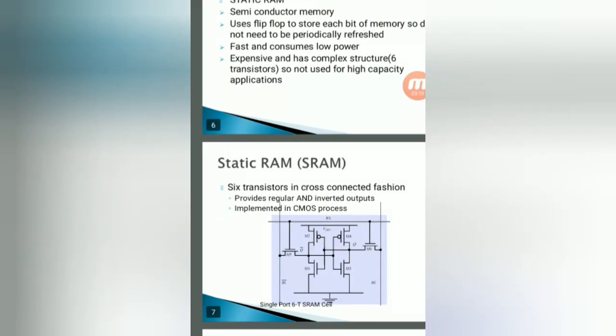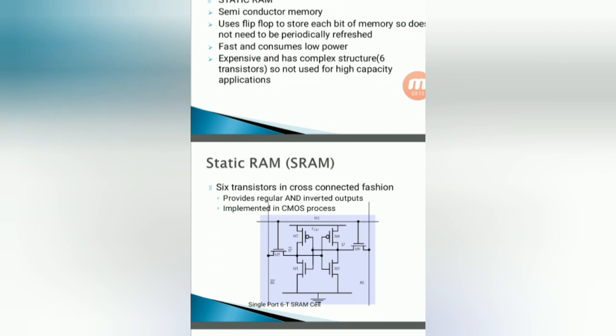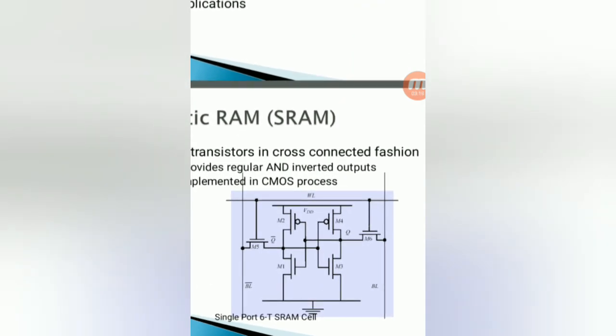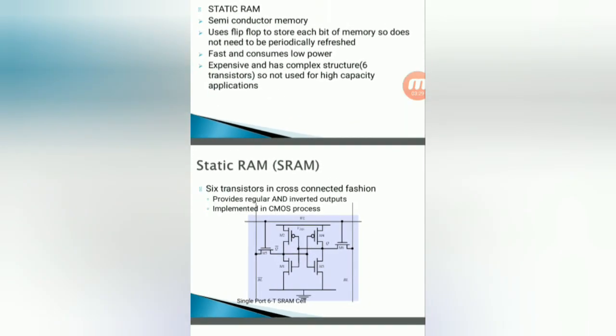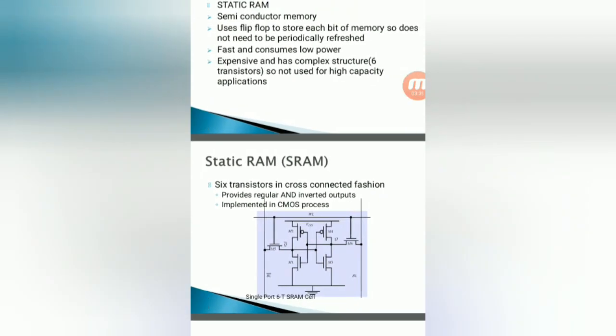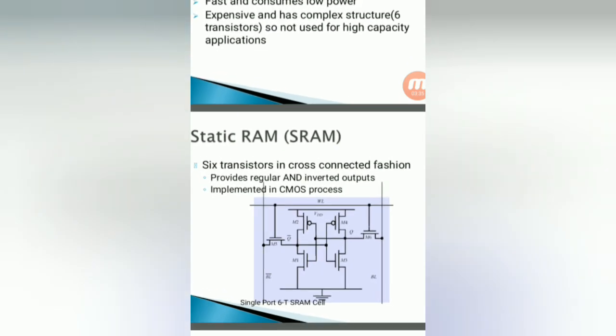So here we see the static RAM implemented with six transistor-based SRAM cell. Here you can go for six transistors in cross connection, based on WL means write line and BL means bit line, and so like that we can go for implementation of the random access memory, that is static memory. This is the basic diagram for implementation.